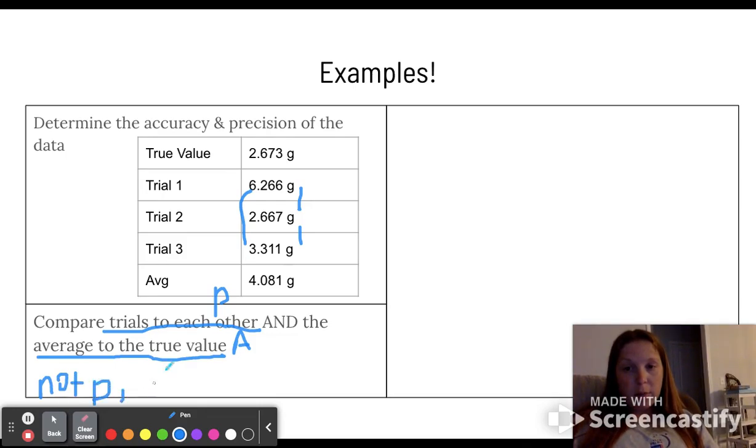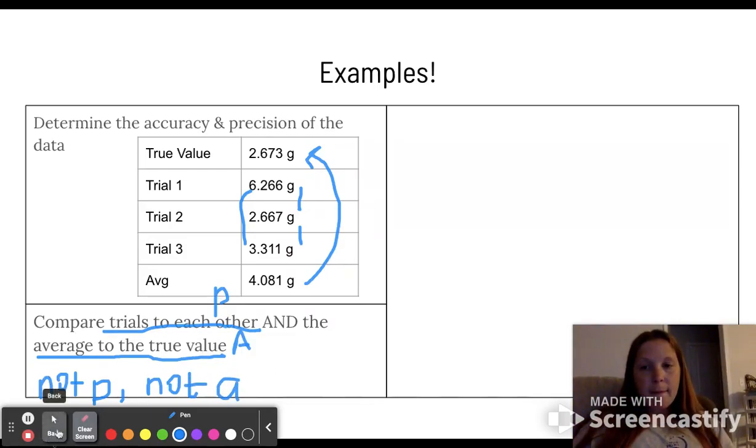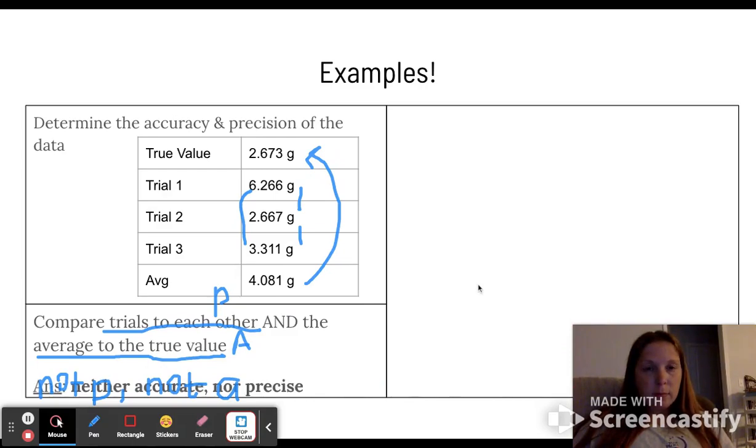I'm going to abbreviate that to speed this up. Now, accuracy is average to true value. They are nowhere close to each other. So I would say not accurate either. Neither accurate nor precise. So that's what we've got on there.